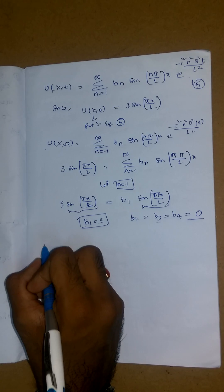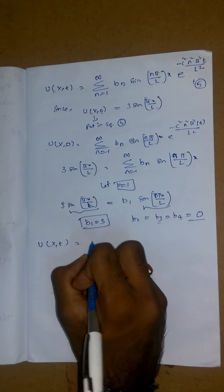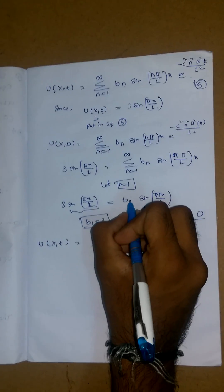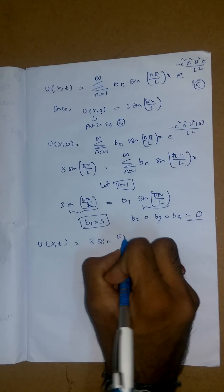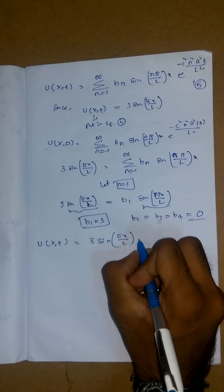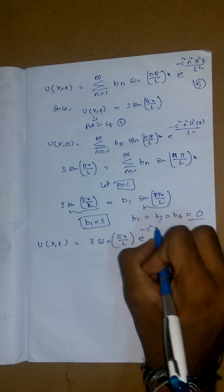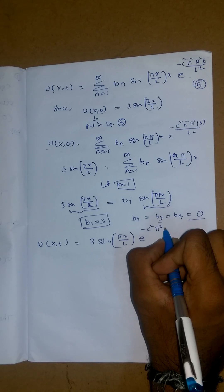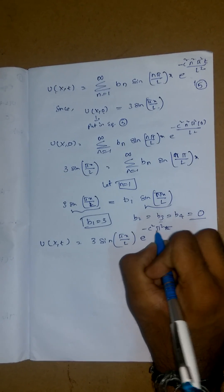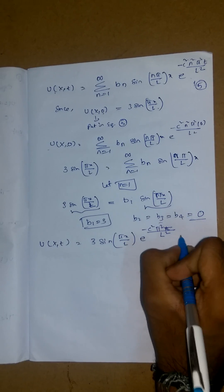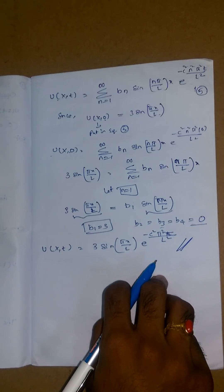Therefore the final solution is u(x,t) = 3 sin(πx/L) · e^(−c²π²t/L²). This is the required solution for this problem. Thank you.